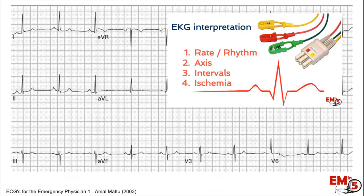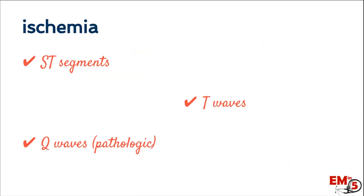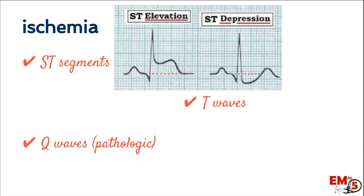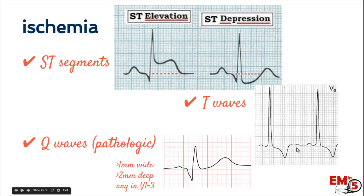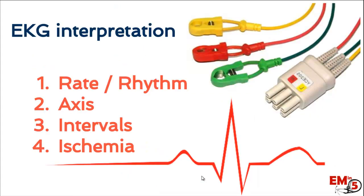Lastly, we're going to look for signs of ischemia — always important for ER physicians. There are three things to look at: the ST segment, T waves, and pathologic Q waves. For ST segments, look for elevation or depression in contiguous leads. For T waves, look for new T wave inversion or biphasic T waves. For Q waves, a pathologic Q wave is one that is very wide and deep.